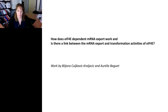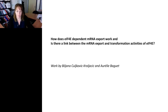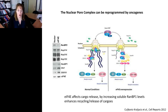I want to take a few slides to show you work explaining how 4E-dependent RNA export works, what the mechanism is, and whether there is a link between RNA export and the transformation activities of 4E. This work is done mainly by Biljana Culjkovic, Krepslich, and Orly Beguet. Our model — I'll show the model first and then the supporting data — is that we have two arms: the normal condition, where RNAs exit the nuclear pore complex through the nuclear basket and cytoplasmic fibrils.